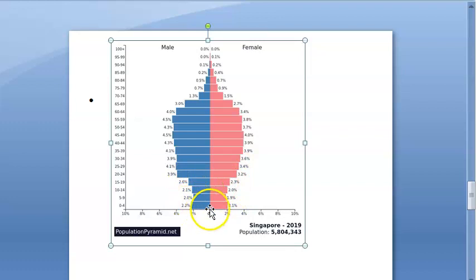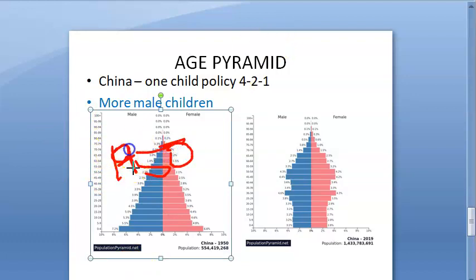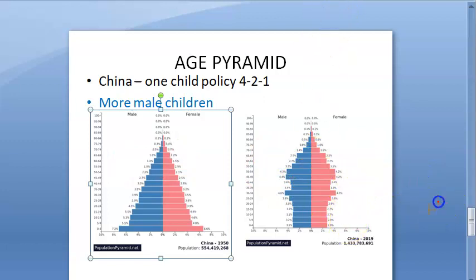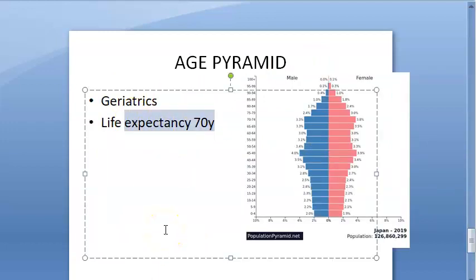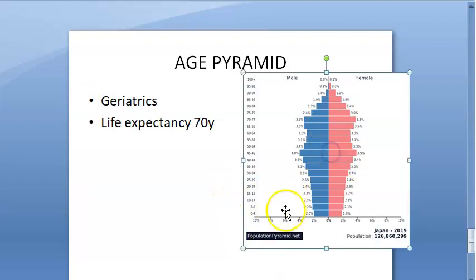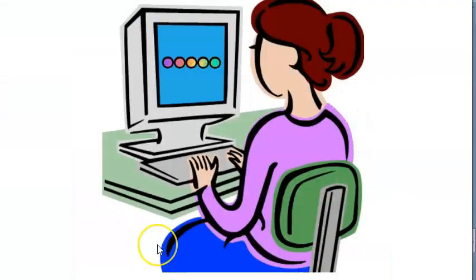Singapore has a very narrow base but seems to be trying to increase its birth rate again. China in 1950 was expanding, but by 2019 it looks like an aging population. Japan shows a pattern of aged population with high life expectancy, which brings the issue of geriatric preventive medicine. Longer life expectancy means more elderly, making geriatrics increasingly important.